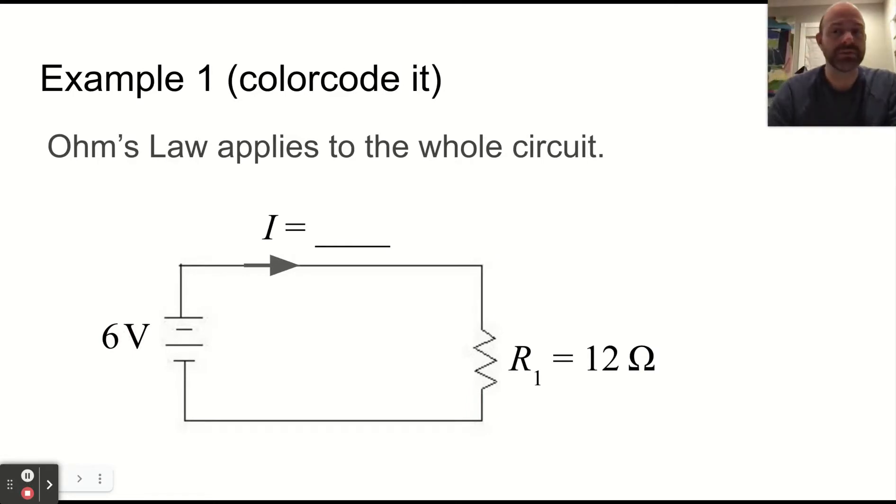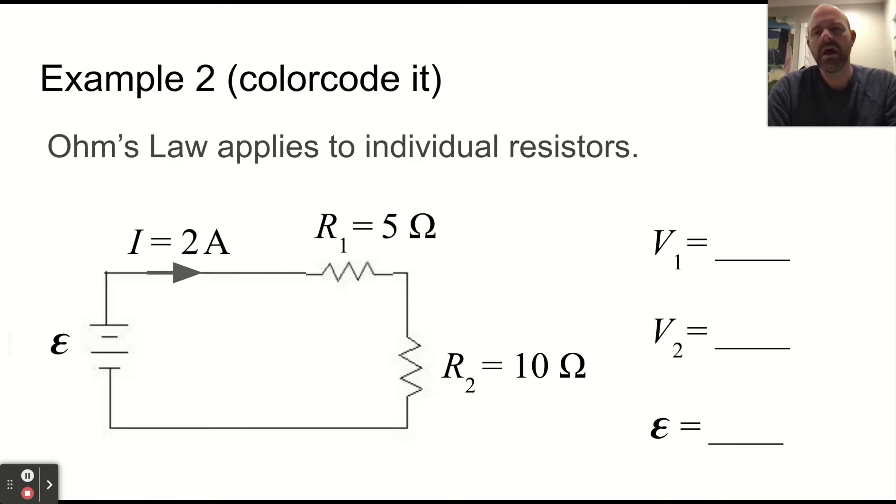Let's do an example or two. In this example, we could color code the circuit, but we know that if there is six volts in the battery, there's only one resistive element. So it has a voltage of six volts across it. Ohm's law would say the current through this resistor is six volts divided by 12 ohms or half an amp. And that has to be the current everywhere in the circuit because there's only one.